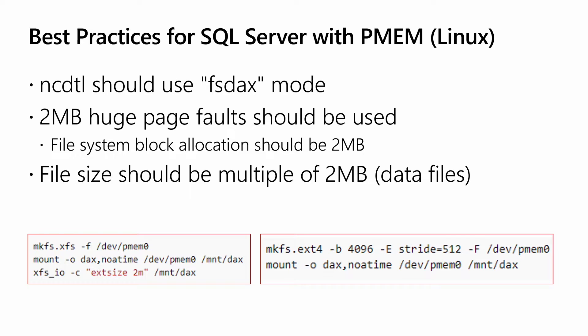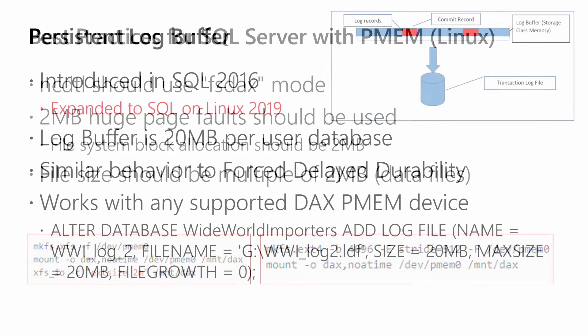For Linux, the non-volatile device control utility is used to configure these devices. You would set it to FS DAX mode, use two-megabyte huge page faults, and set your block allocation also to two megabytes. XFS or EXT4 are the two supported file systems with DAX.